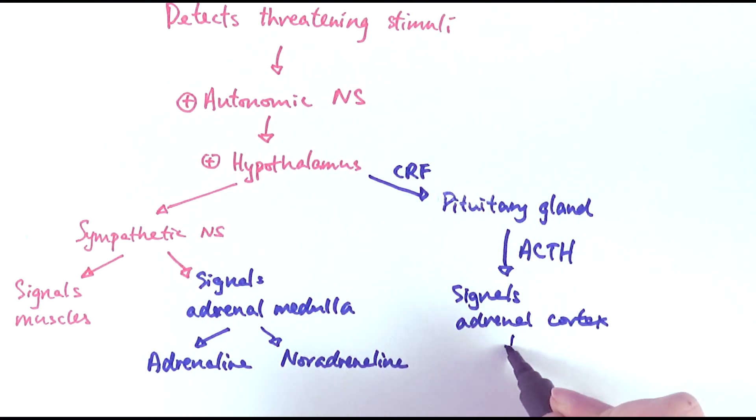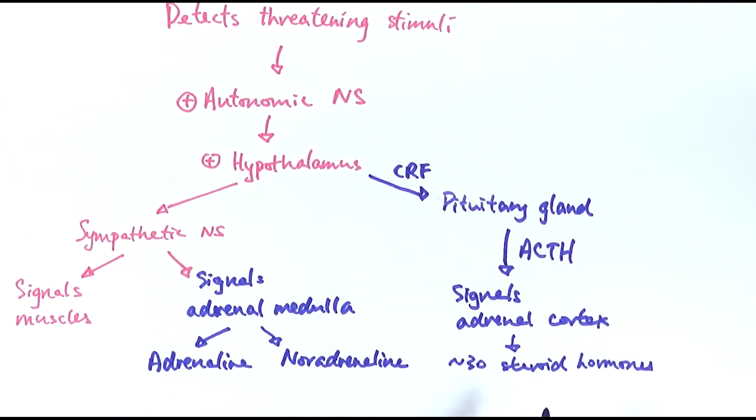The adrenal cortex would be able to release about 30 steroid hormones. Without going into too much detail, you can refer to my other video talking about adrenal cortex, but some of the steroid hormones could regulate glucose metabolism or protein metabolism.